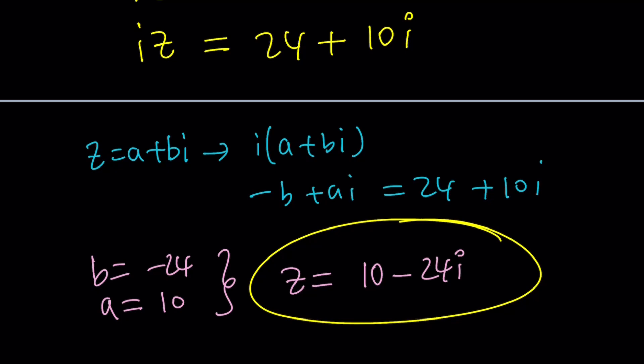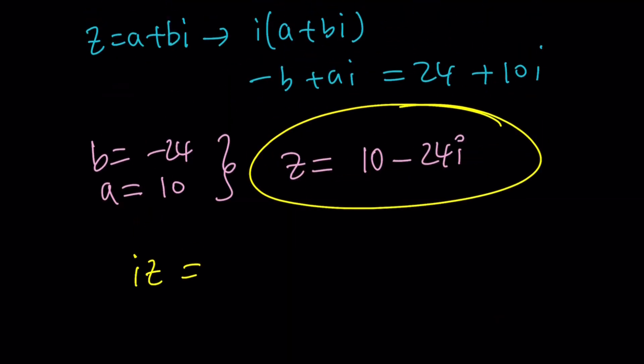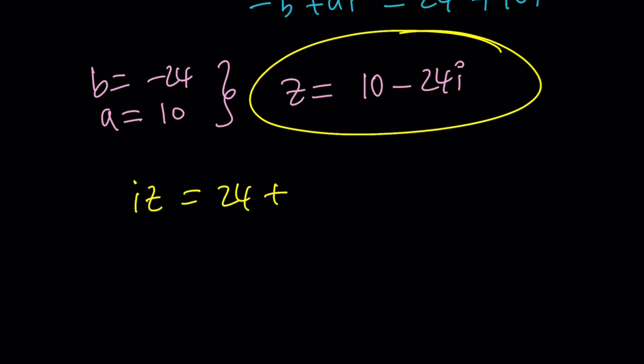But how do you do it by division? Well, here's what you can do. You get iz equals 24 plus 10i, and then you're going to divide both sides by i, or I have a better idea, multiply by negative i. It's better, right?